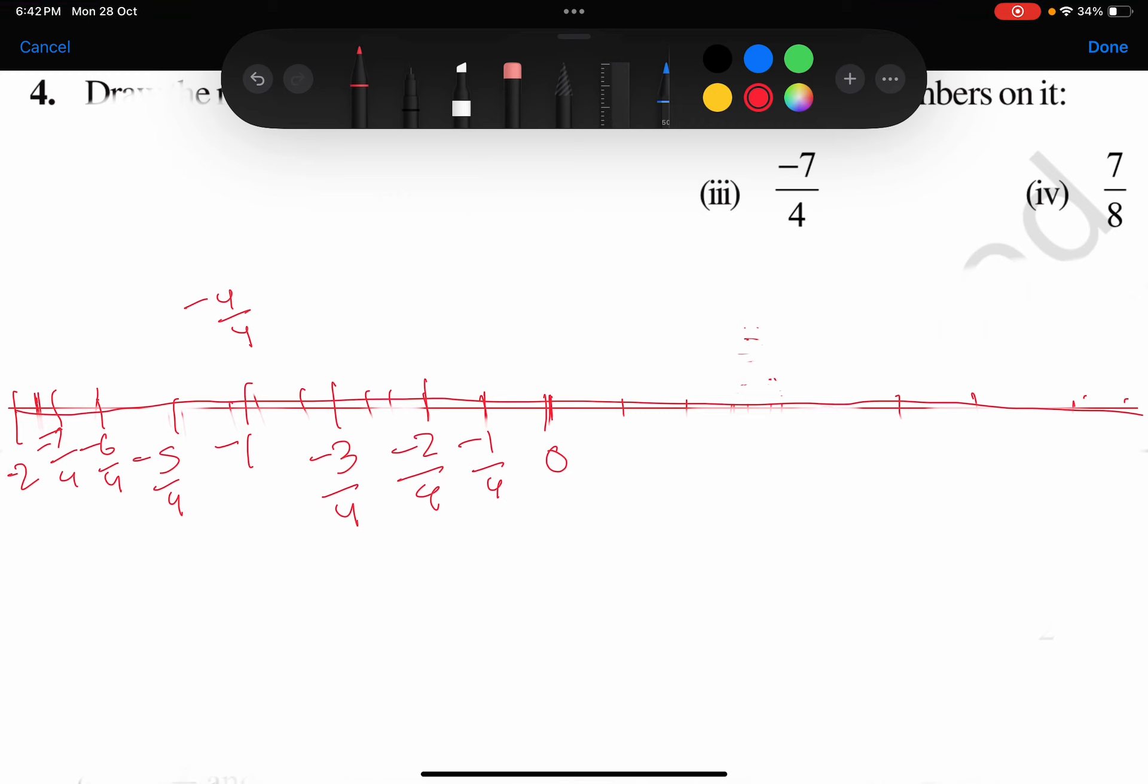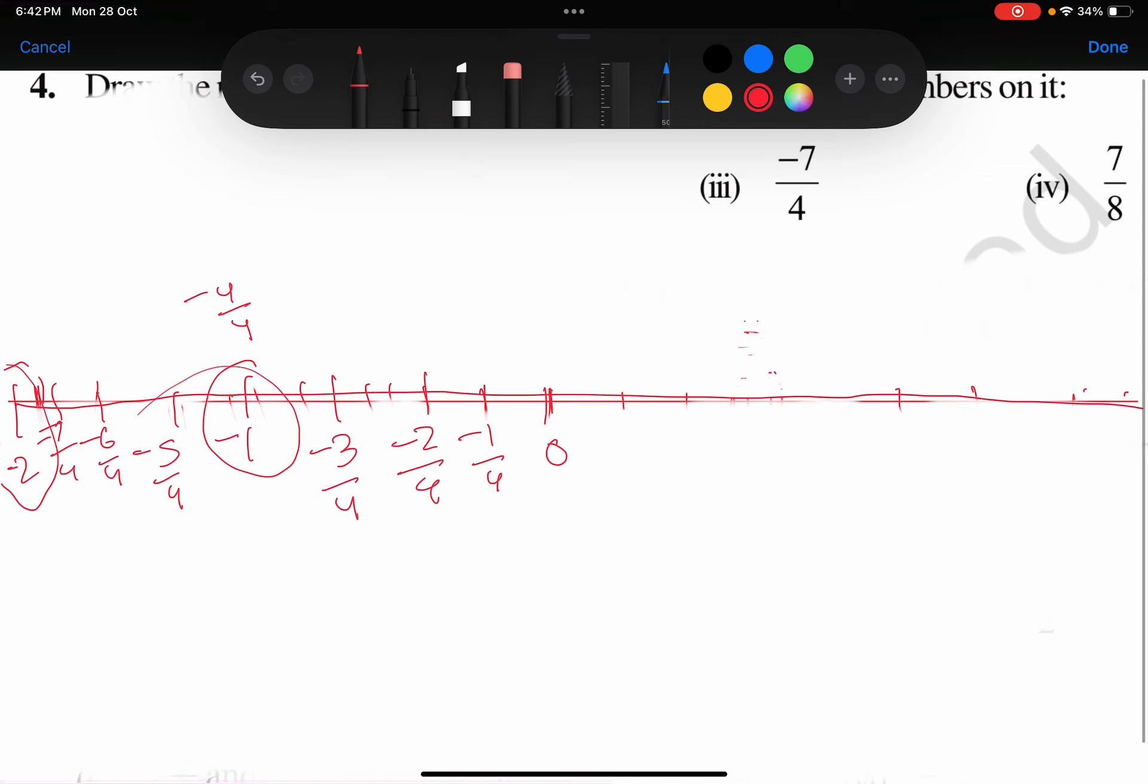Minus 7/4 lies between minus 1 and minus 2, and it is represented by point D. You can write any point. It represents—it lies between minus 2 and minus 1, and minus 7/4 is represented by point D.